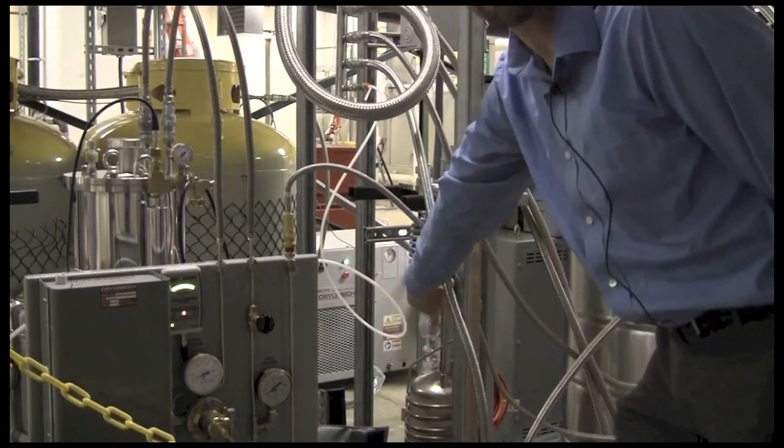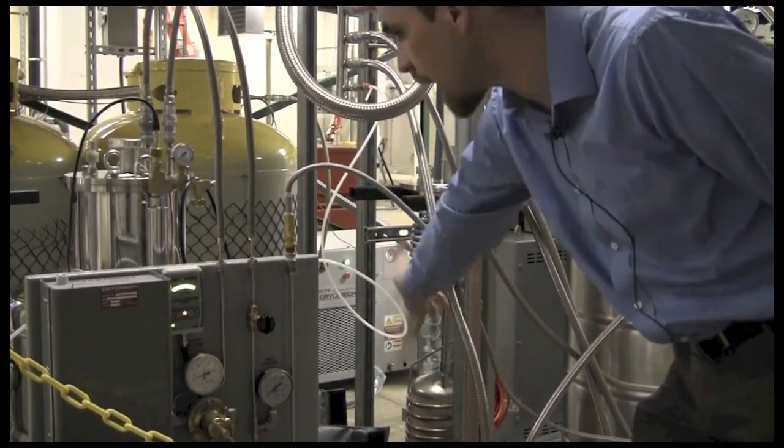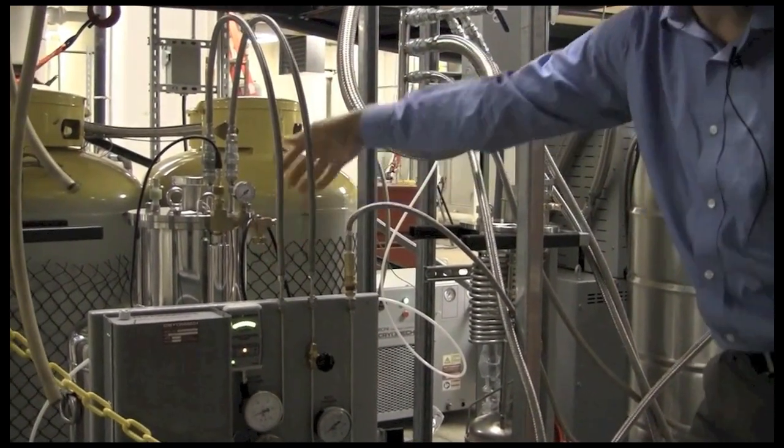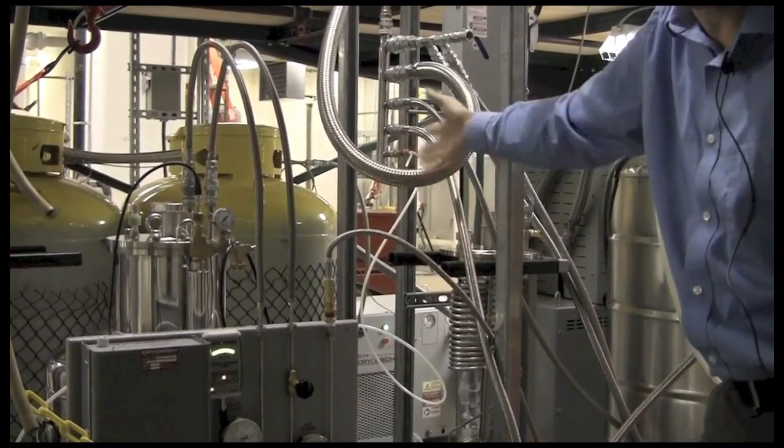After a while the trap fills up and we have to clean it out or regenerate it, so what we do is we take a clean trap and put it into the dewar and then take the dirty trap out and regenerate it by putting a vacuum on it and heating it to drive out all the impurities.